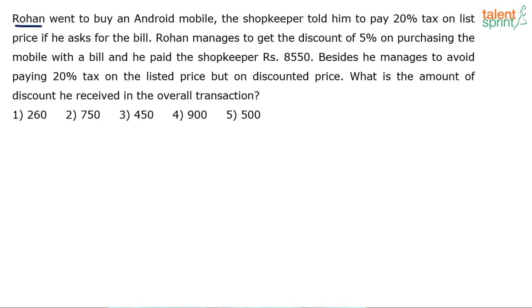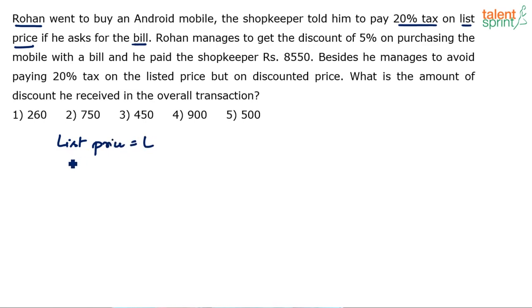So, understand that Rohan went to buy a mobile phone. The shopkeeper told him to pay 20% tax on the list price if he asked for the bill. Let's assume the list price is L. The total amount will be L plus 20% of L because he has to pay 20% tax. So, this is what Rohan has to pay: L plus 20% of L.